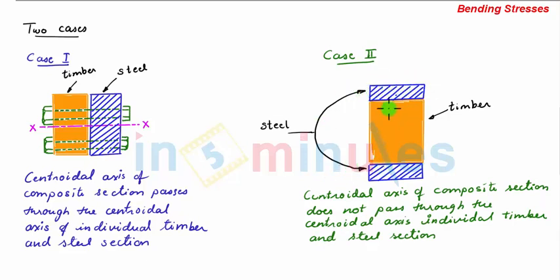The centroidal axis of all three sections are also shown. Due to symmetry of the composite section, the centroidal axis of the composite section will pass through the center of the timber section. So the centroidal axis of the composite section passes through the centroidal axis of the timber section.